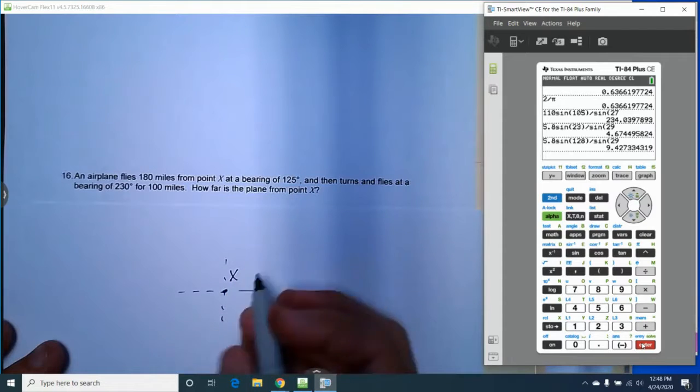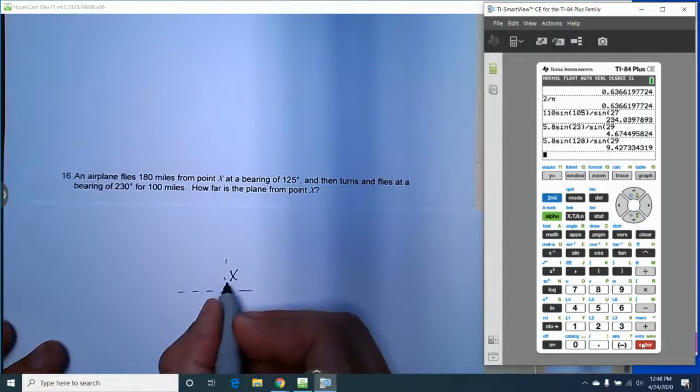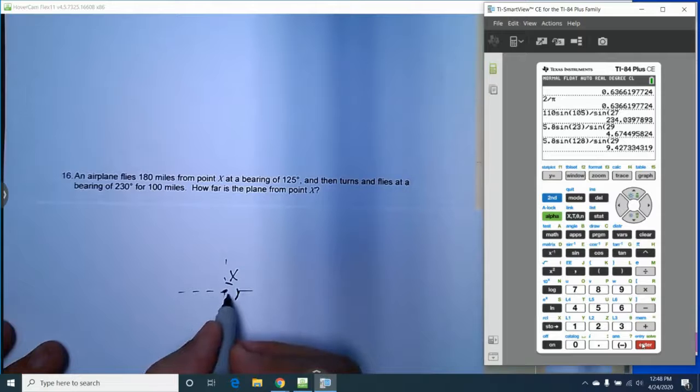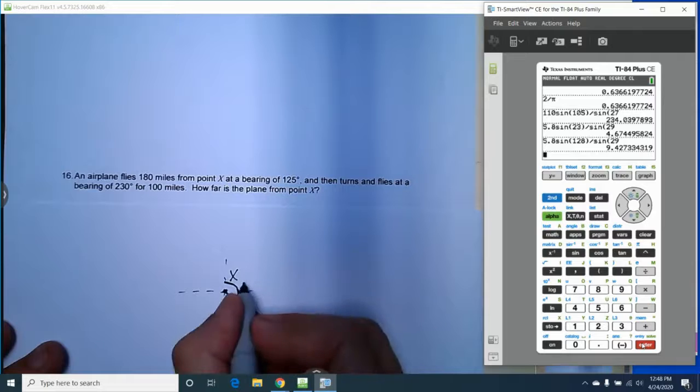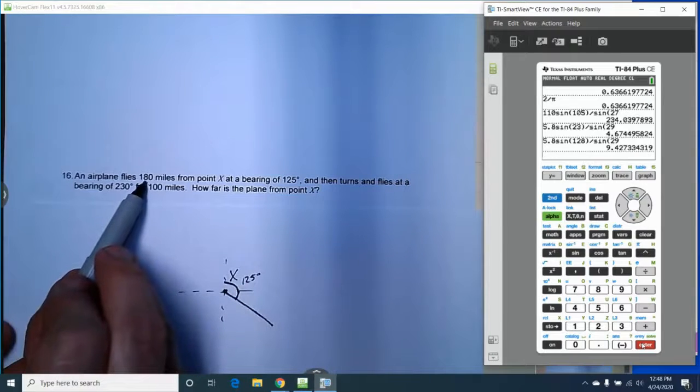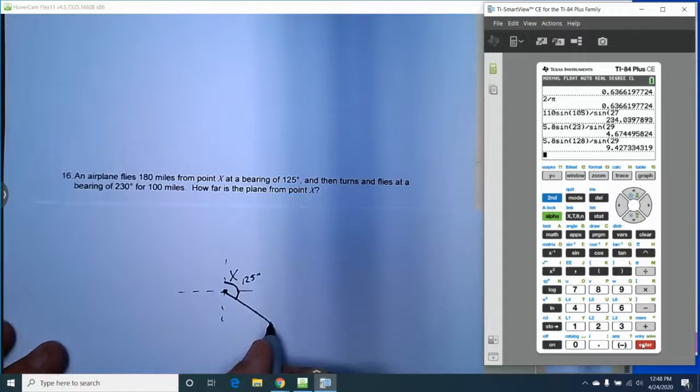And if I'm going at a bearing of 125, I'm starting from due north. Here to here would be 90 degrees, so it's going to be another 35 degrees past that. So that's going to put it about there. That means it's going in that direction. We know it's going in that direction for 180 miles. I'm just going to draw this out here and make this 180 miles.